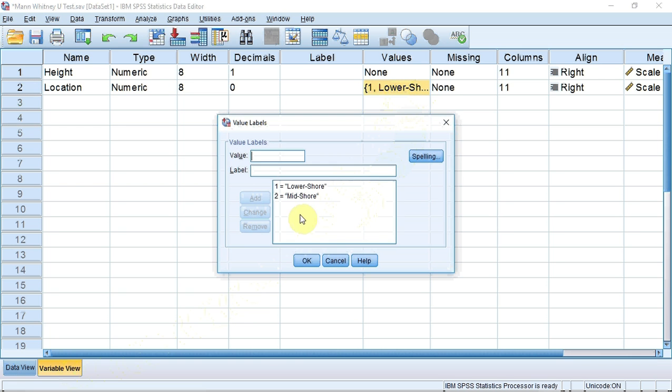We can see that I've instructed SPSS to use the number 1 and associate it with the term lower shore, and the number 2 and associate it with the term mid shore. For more information on how to do this, follow the web walkthrough, or look at my introduction to SPSS screencast.